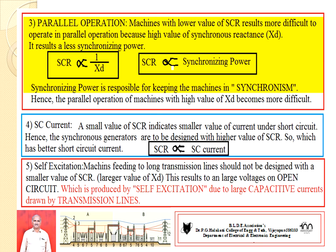This is a well-known exam question — it may be asked for 10 marks: 'What do you mean by SCR and briefly discuss the factors affecting the performance of the machine?' Please prepare this topic. In the next class, we will cover the design of field current, which is the last part of synchronous machines. Thank you.